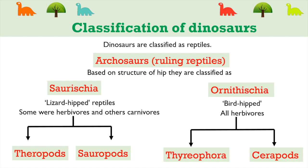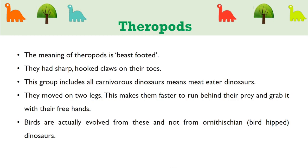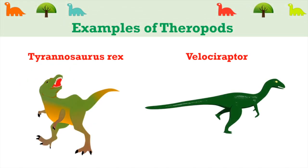Bird-hipped dinosaurs come under Ornithischia, and in this group all dinosaurs are herbivorous. They are further classified as Thyreophora and Ceratopsians. The meaning of theropods is beast-footed. They had sharp hooked claws on their toes. This group includes all carnivorous, meat-eating dinosaurs. They moved on two legs, which made them faster to run after prey and grab it with their free hands. Birds actually evolved from theropods, not from Ornithischia. The best examples are Tyrannosaurus rex (T-rex) and Velociraptor.